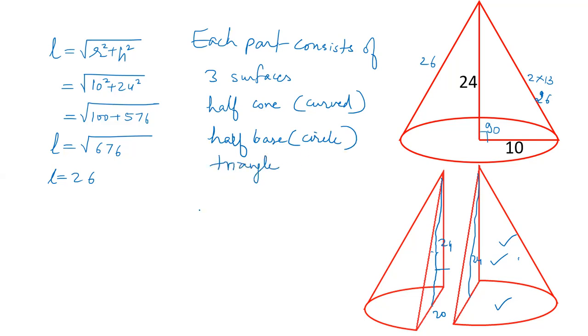So surface area will be the curved surface area of half cone plus area of base plus area of triangle. Curved surface area is 1 by 2 pi r l. As the curved surface area of a cone is pi r l, here we have half of the surface, so we have written half pi r l. Area of base is half of pi r square, and area of triangle is half base into height.